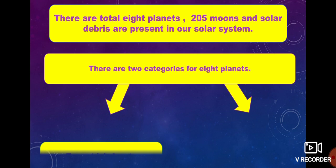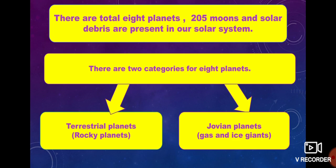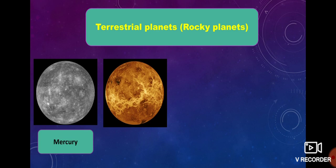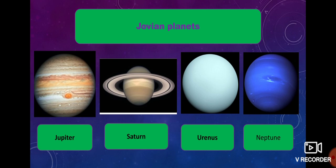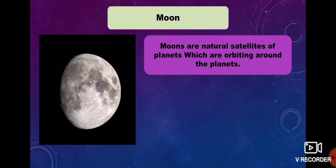Now, there are a total of eight planets, 225 moons, and solar debris present in our solar system. The eight planets are categorized into two types: first, terrestrial planets, also known as rocky planets or inner planets; and second, Jovian planets, also known as gas or ice giants or outer planets. The four terrestrial planets are Mercury, Venus, Earth, and Mars. The four Jovian planets are Jupiter, Saturn, Uranus, and Neptune. Jupiter and Saturn are gas giants, while Uranus and Neptune are ice giants.